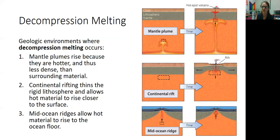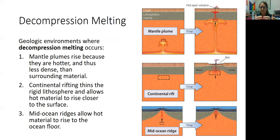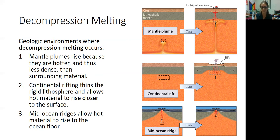Decompression melting can happen in many places within the earth. It can happen as a mantle plume rises up to the surface. It can also happen as the lithosphere starts to rift apart and begins to thin — as the lithosphere thins, there's less and less pressure on the mantle below it. This can also happen at a mid-ocean ridge, where the mantle circulates and hot material rises up towards the surface at that divergent plate boundary in the ocean. The temperature stays the same, but when pressure is relieved, rocks can melt.